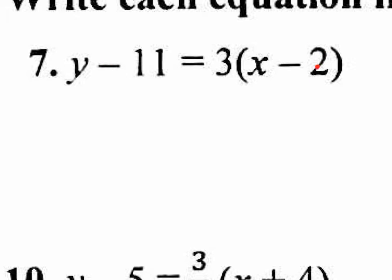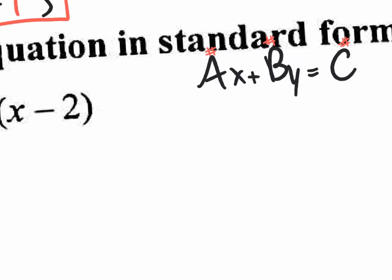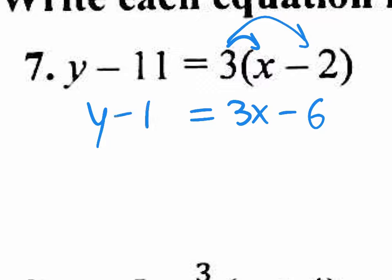Standard form has no parentheses, so I need to distribute. 3 times x is 3x; 3 times negative 2 is negative 6. Rewrite the y minus 11. For standard form we don't want y by itself — we want x's and y's on one side and the number on the other. So I get rid of the negative 11 by adding 11 to both sides — that cancels out. Don't make the mistake of leaving it in slope-intercept form; the instructions say standard form. So subtract 3x from both sides, giving negative 3x plus y equals 5.